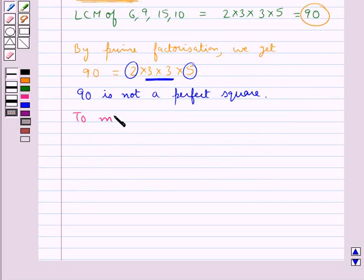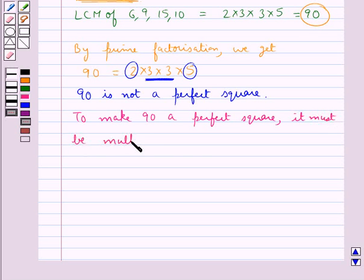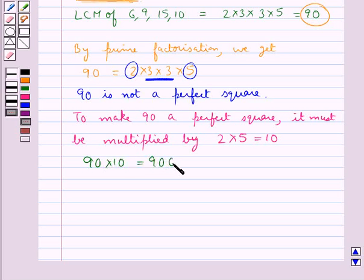To make 90 a perfect square it must be multiplied by 2 into 5 that is 10. Now 90 multiplied by 10 gives us 900.